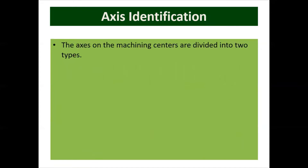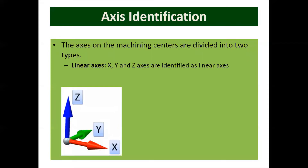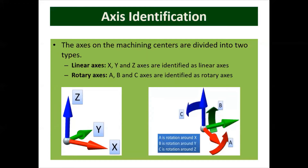The axes of machining centers are divided into two types. One is the linear axis — that is the X, Y, and Z axis. The other is the rotary axis, which is always identified by A, B, and C, as you can see on your screen.